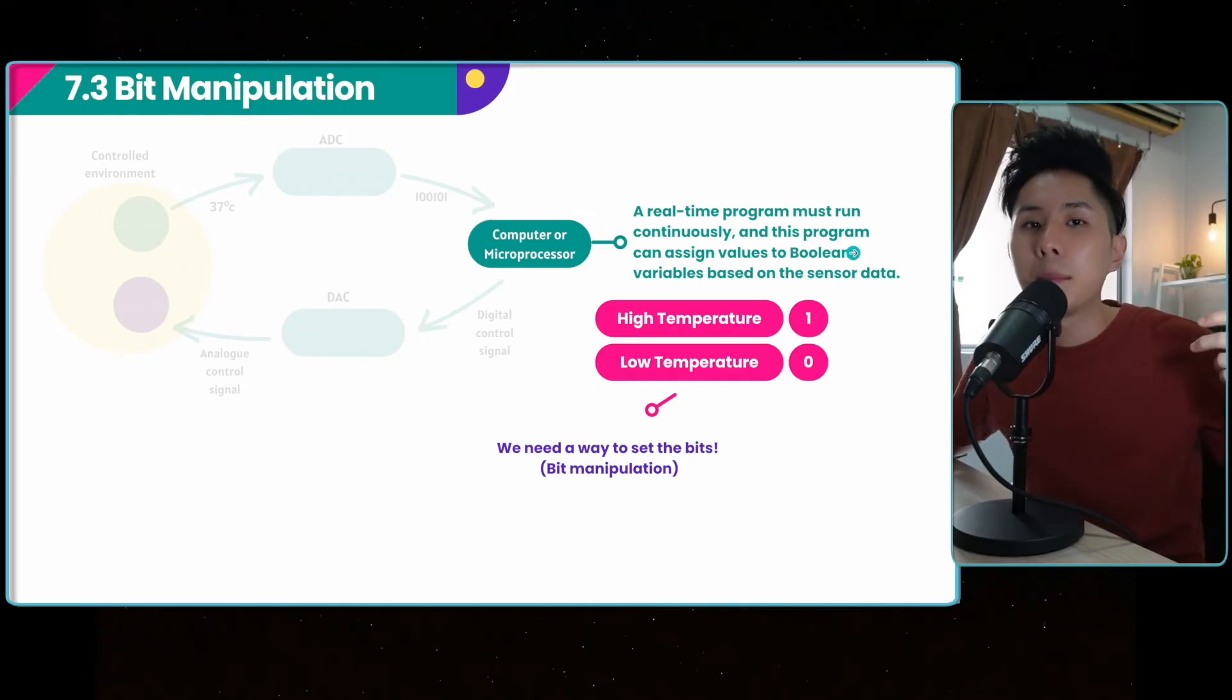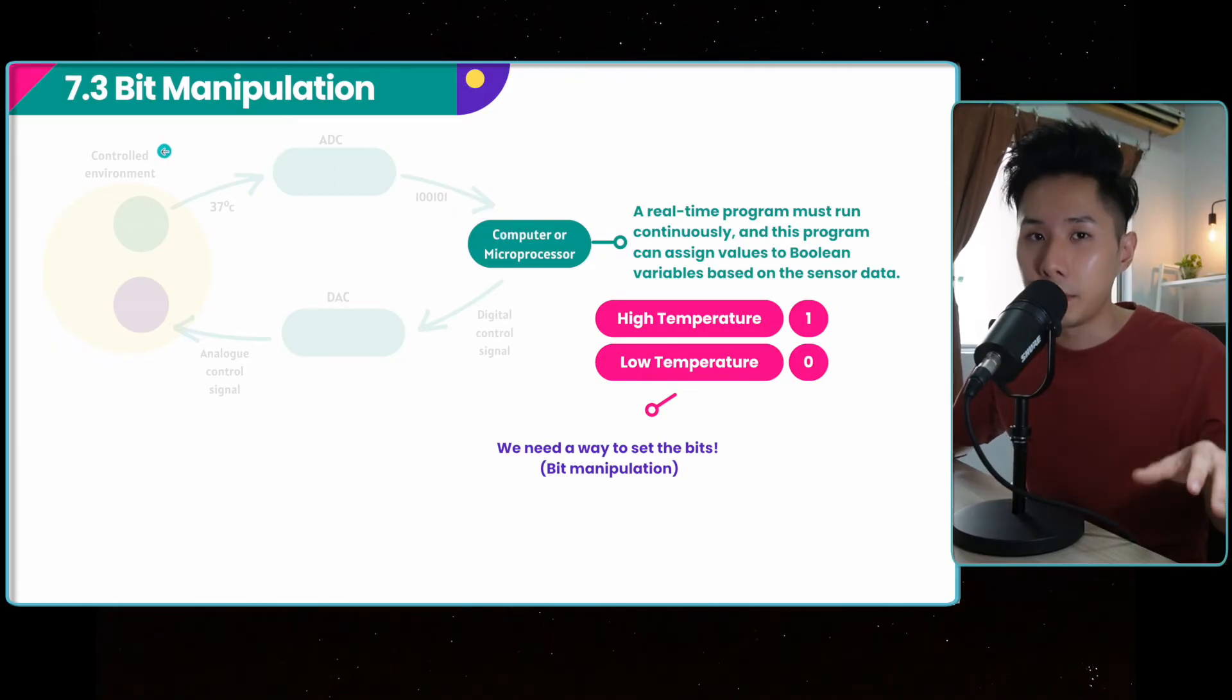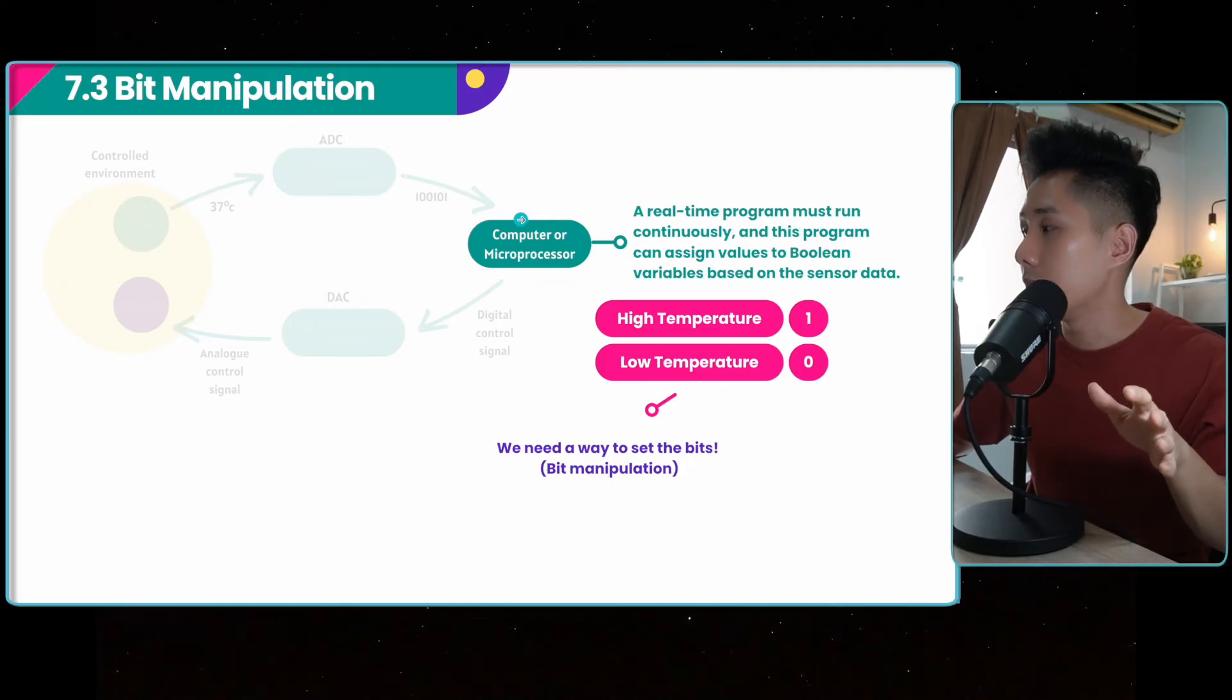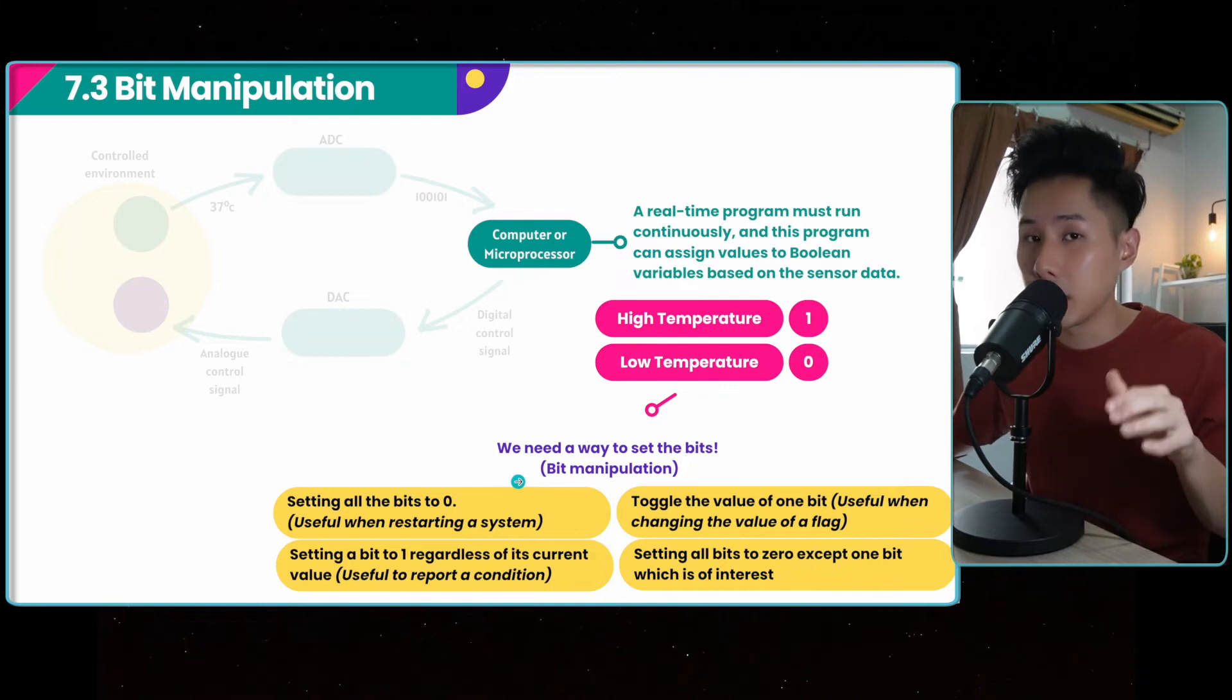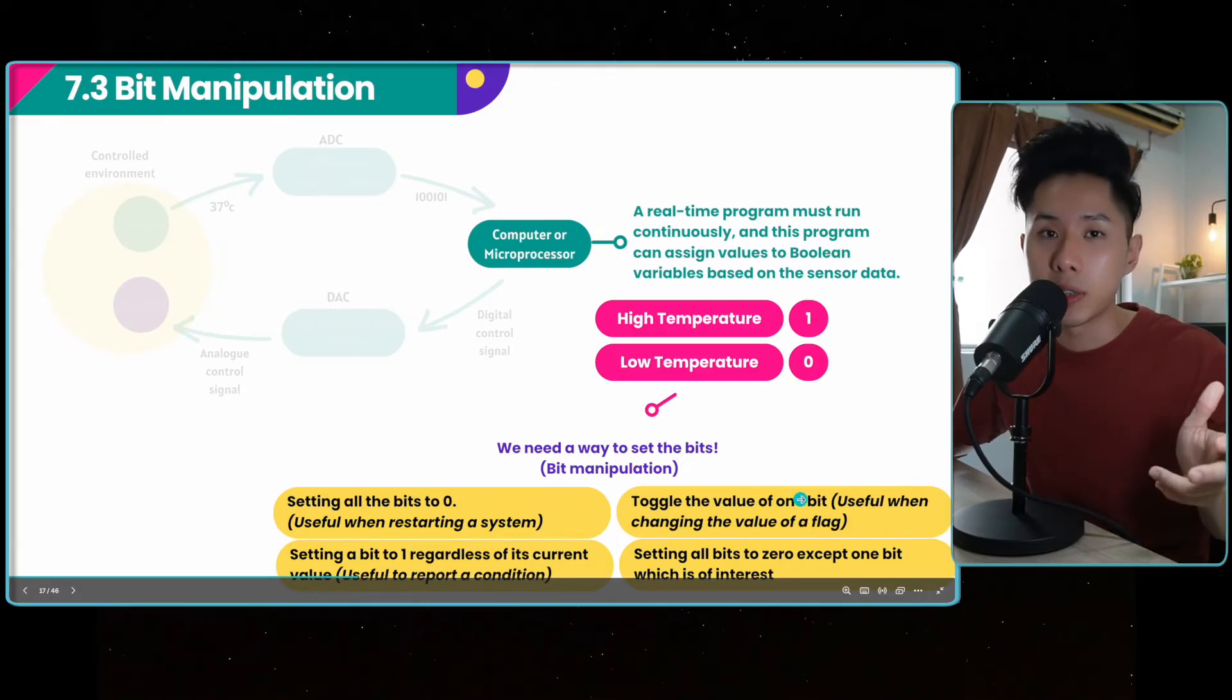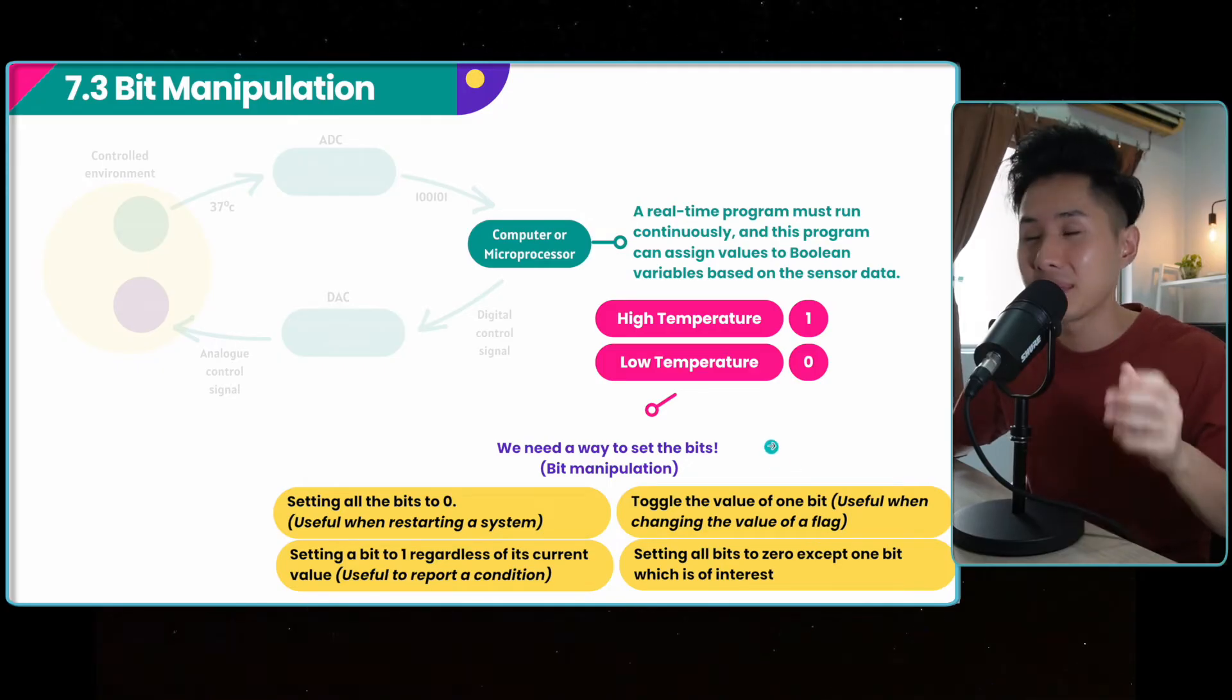But what is actually happening behind the hood? What is happening inside this microprocessor? This is when bit manipulation comes in. You will learn what are the different ways we can use assembly language to change the bit inside a microprocessor. These are some of the ways that we'll be changing the bits in the processor: setting all the bits to zero, toggle the value of just one bit, setting a bit to one regardless of its current value, setting all bits to zero except one bit which is of interest. And in the next part of the video, I will show you when will this scenario happen. So be patient with me.